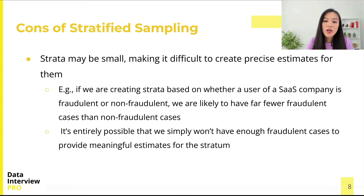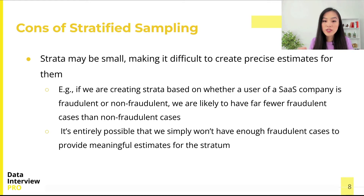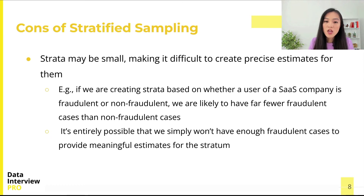For instance, if we are creating strata based on whether a user of a system is fraudulent or legitimate, we are likely to have far fewer fraudulent cases than non-fraudulent cases. It's entirely possible that we simply won't have enough fraudulent cases to provide meaningful estimates for them, particularly if we consider other factors such as gender or age to create groups.